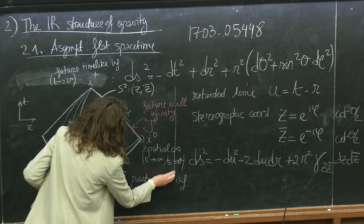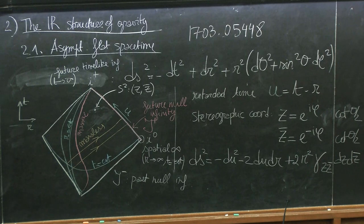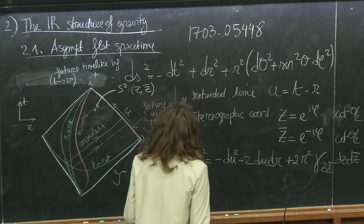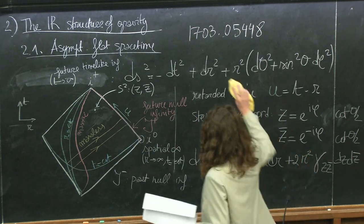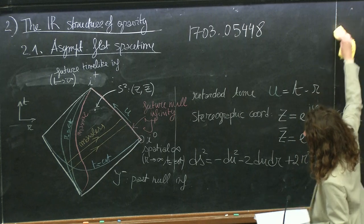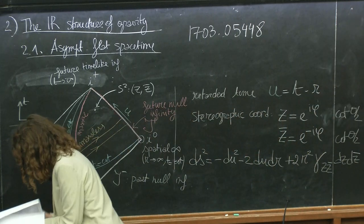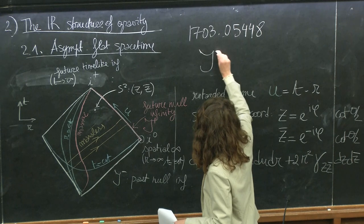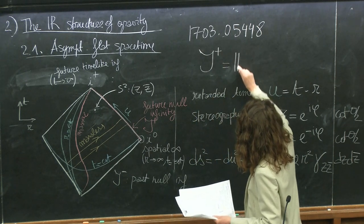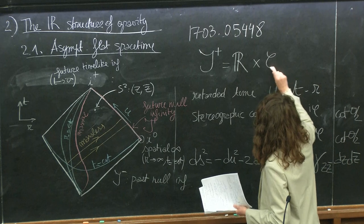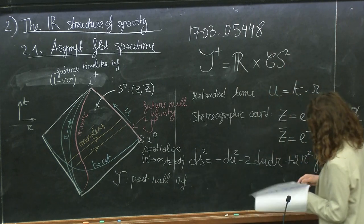What is the celestial sphere and where will our theory live? As I said, each point in this diagram is a two-sphere. So topologically, future null infinity is a real line — spanned by the coordinate U — times a two-sphere. This sphere is called the celestial sphere, which I will sometimes write as CS².